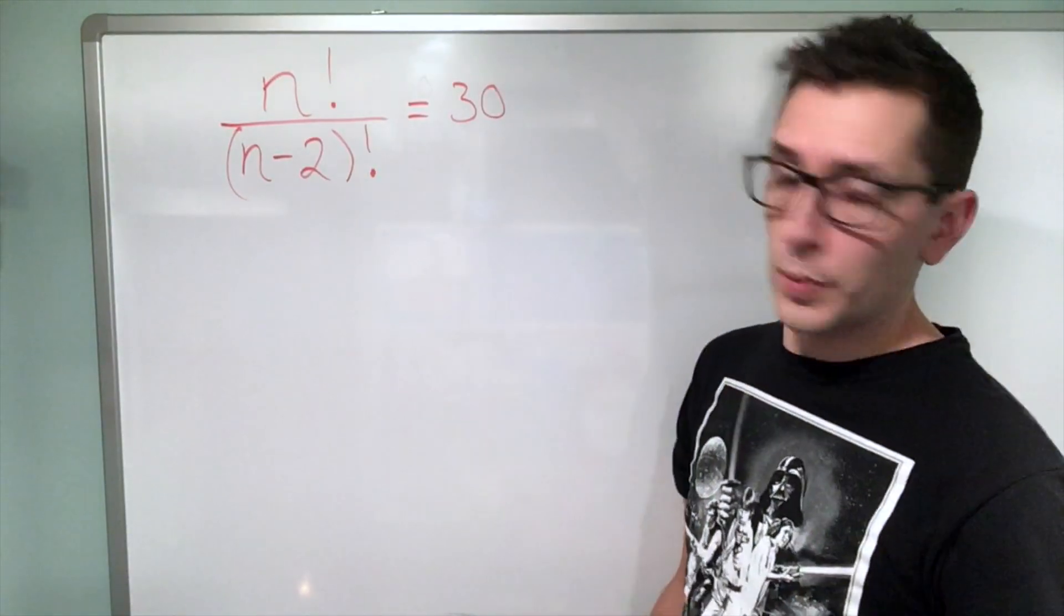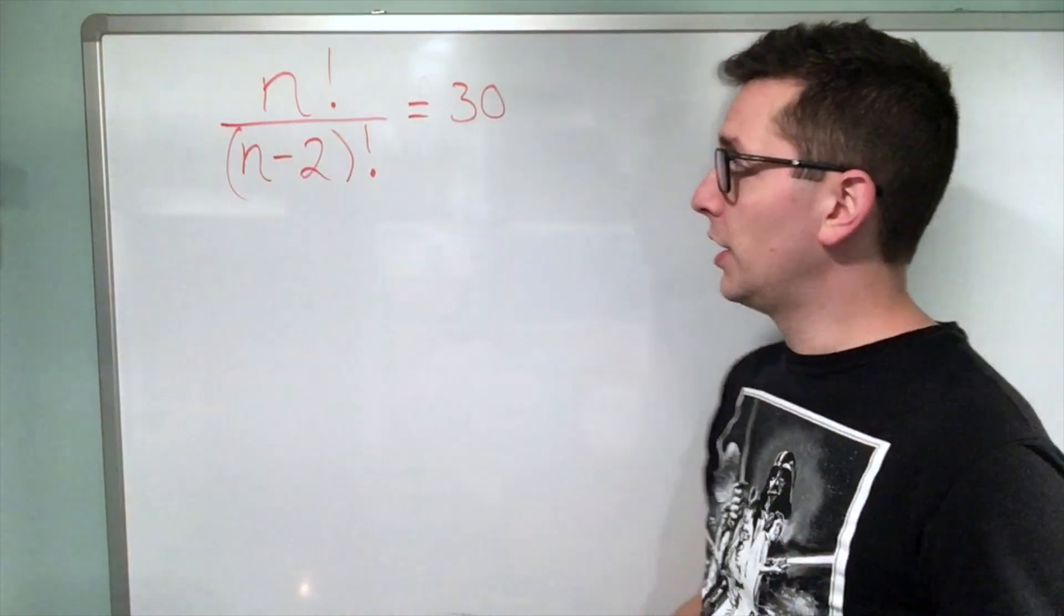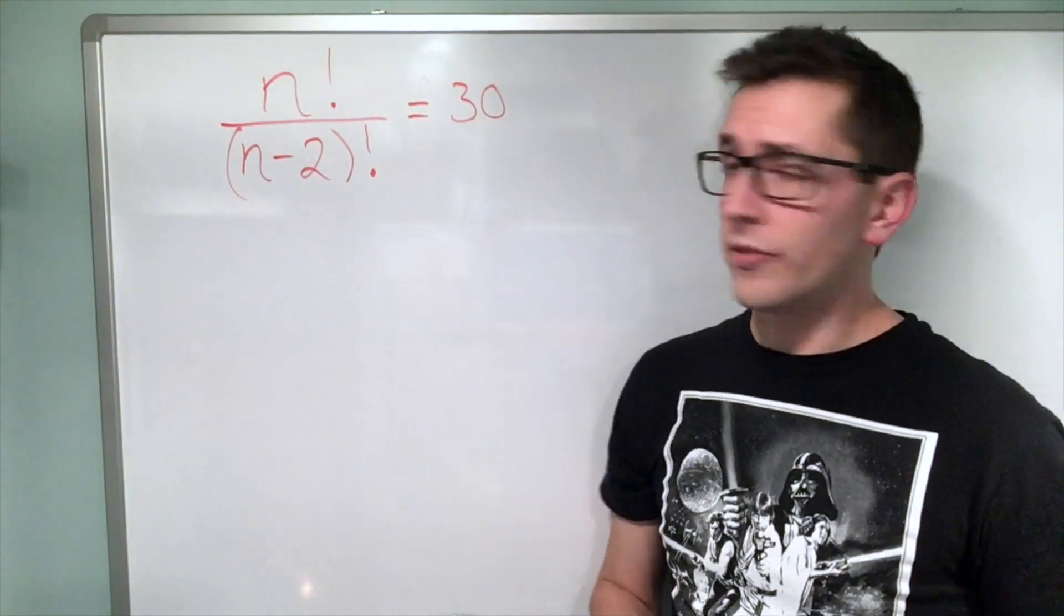Alright, so we're being given the following expression: n factorial divided by n minus 2 factorial equals 30. And we're being tasked with solving for n.